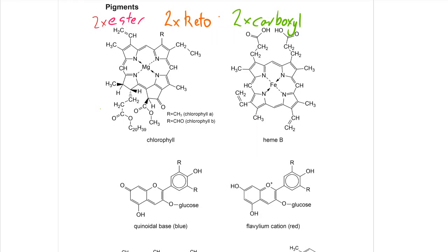Take a look at these four pigments and see if you can find two esters, two keto — otherwise known as oxo groups — and two carboxyl groups.